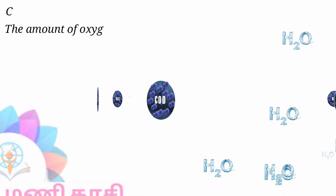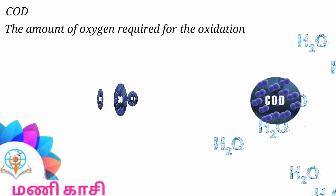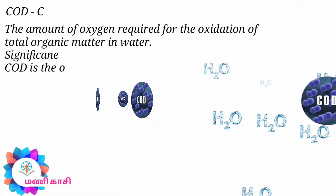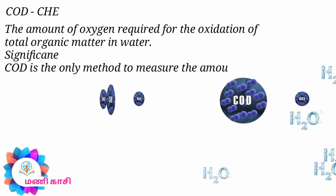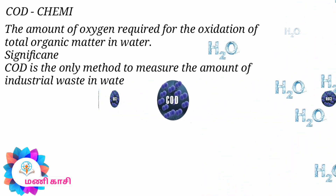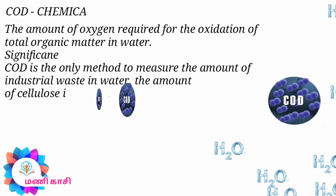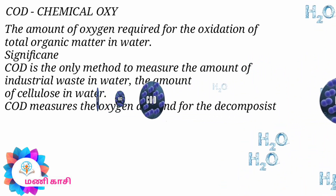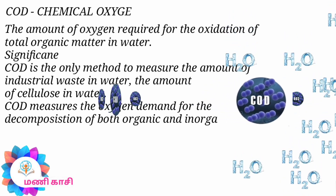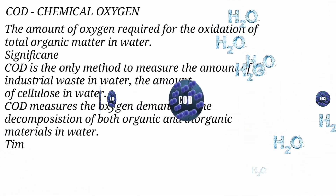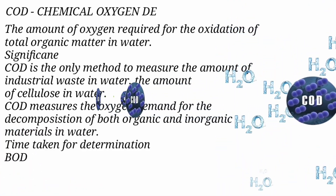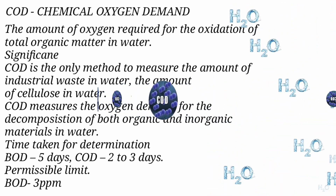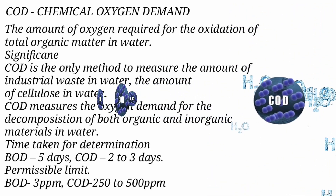COD is the amount of oxygen required for the oxidation of total organic matter in water. COD is the only method to measure the amount of industrial waste and cellulose in water. COD measures the oxygen demand for the decomposition of both organic and inorganic materials. Time taken for determination: BOD takes 5 days, COD takes 2-3 days. Permissible limits: BOD is 3 ppm and COD is 250-500 ppm.